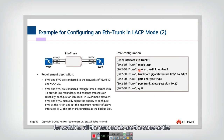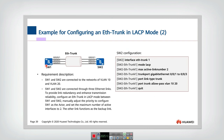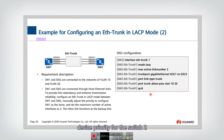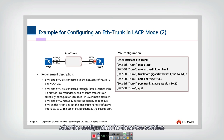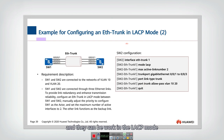All the commands are the same as the configuration for switch one, except the last command — we don't need to set a lower priority for switch two. That's all for the configuration. After configuring both switches, the ether trunk has been created and will work in LACP mode.